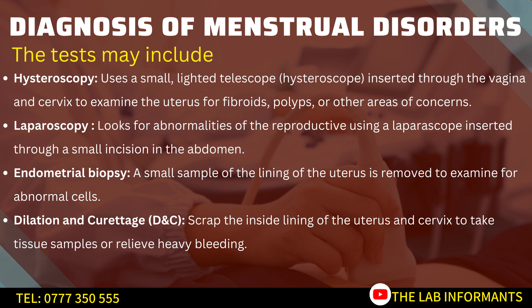The doctor may also order a laparoscopy, which looks for abnormalities of the reproductive organs using a tiny lighted instrument with a camera — the laparoscope — inserted through a small incision in the abdomen. An endometrial biopsy involves removing a small sample of the uterine lining for examination of abnormal cells. A D&C (dilation and curettage) involves scraping the inside lining of the uterus and cervix to obtain a small tissue sample, also used to relieve heavy bleeding.